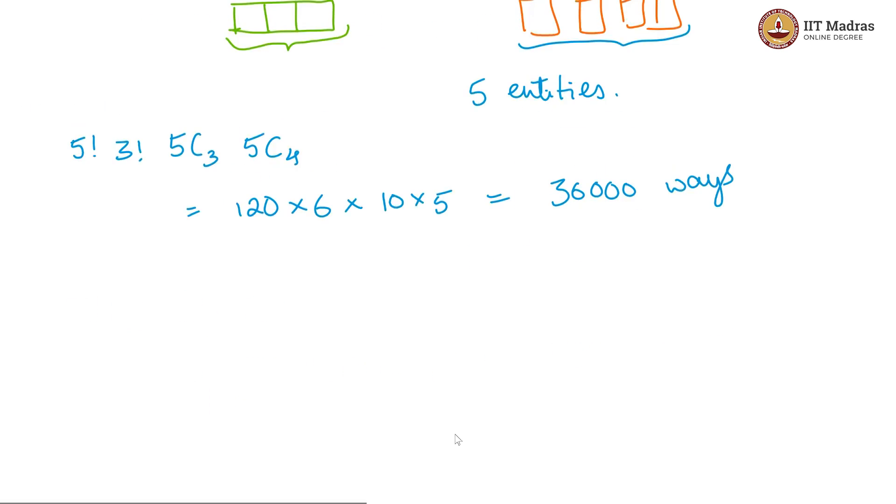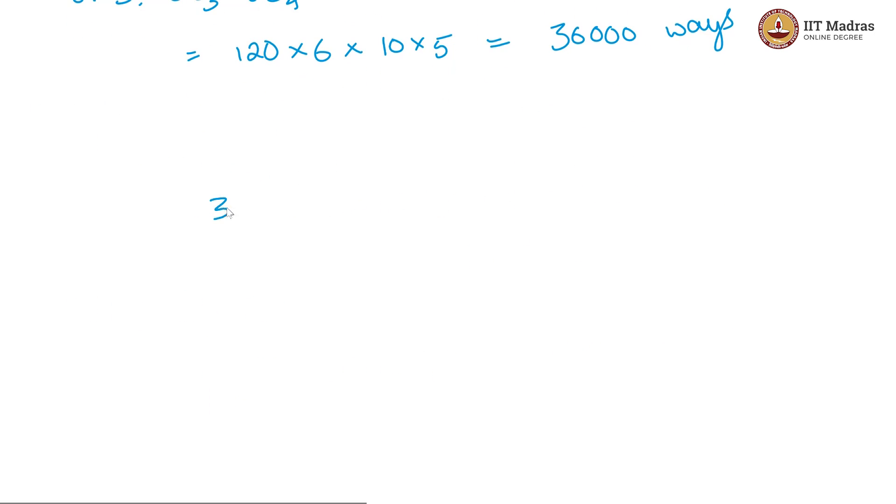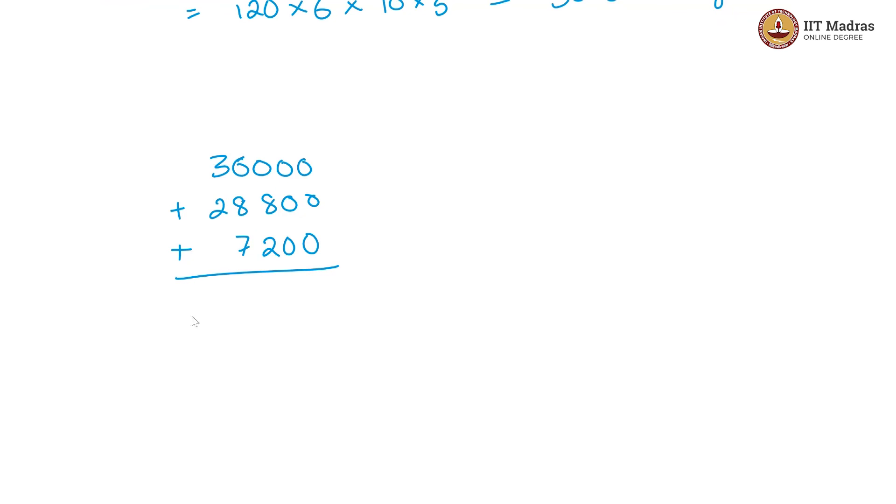All put together we are getting 36,000 for case 3 plus 28,800 for case 2 plus 7,200 for case 1. That gives us 72,000 ways in all.